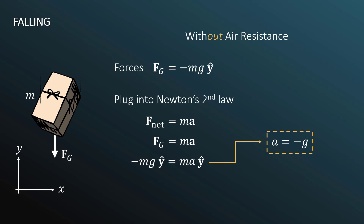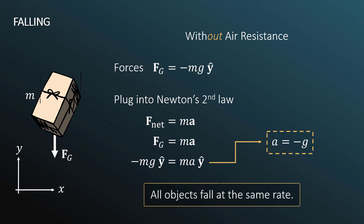The important result: all objects fall at the same rate if there is no air resistance, because the acceleration a equals negative g, which has nothing to do with mass. So a bowling ball and a feather, for example, will fall with the exact same acceleration in an evacuated chamber — falling in vacuum with no air resistance, they fall at the same rate.